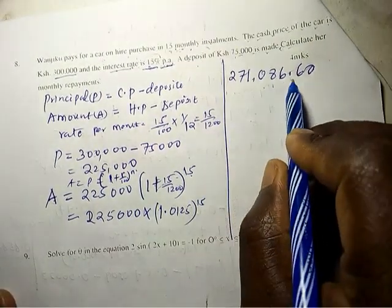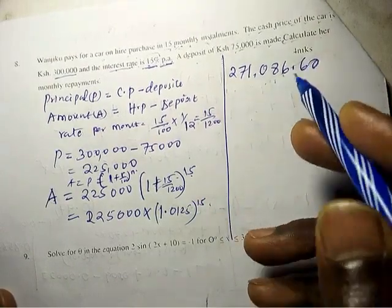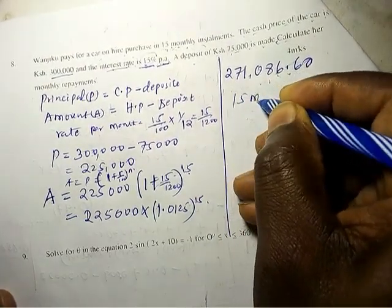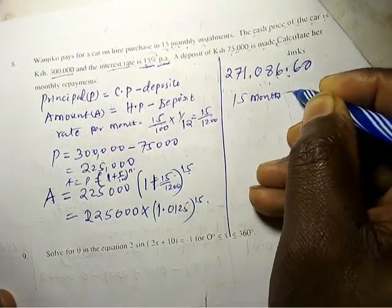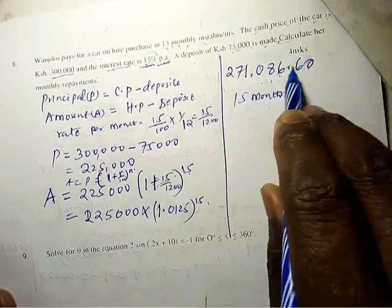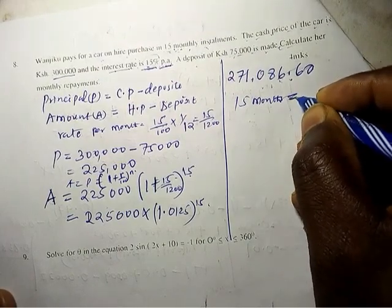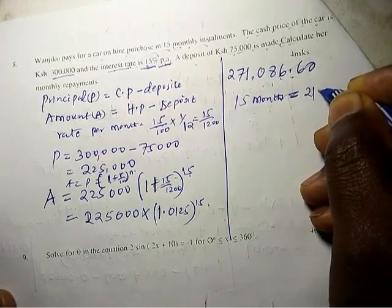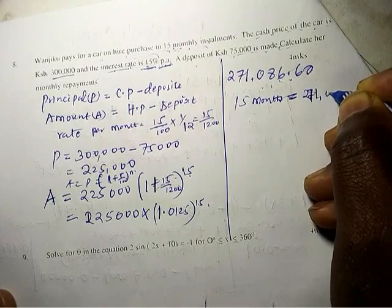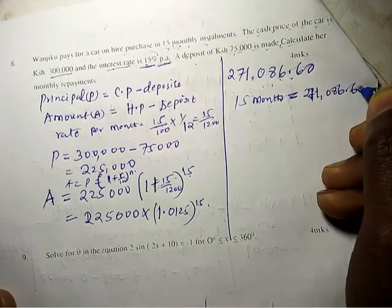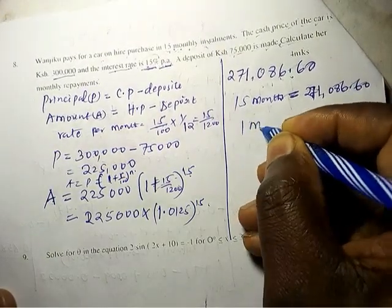So this will be the amount paid for 15 months. 15 months is equal to 271,086.60. What about one month? That is required.